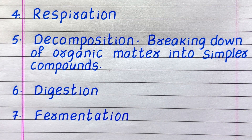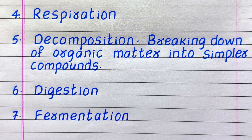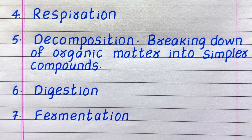The fourth example of a chemical reaction which happens naturally is respiration. Fifth, decomposition — breaking down of organic matter into simpler compounds. Sixth, digestion. Seventh, fermentation.